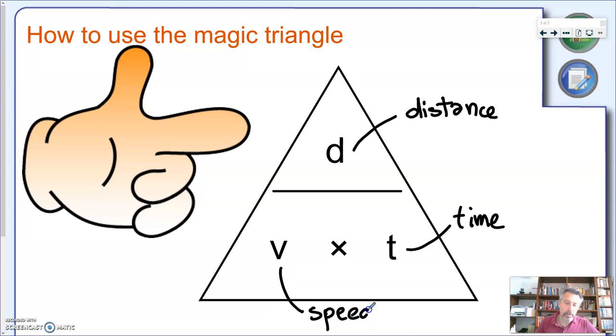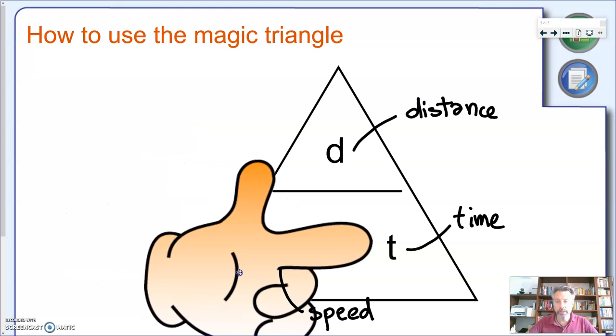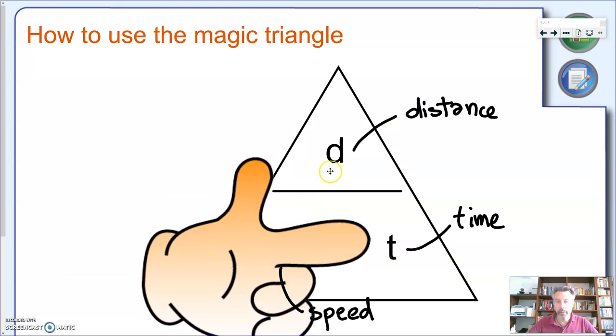Now, the magic triangle works by covering the quantity you want to find, and let's see how that works. So let's start with the first example, the formula we saw before. Let's imagine you want to find the speed. So I will take my hand here, this nice big friendly hand, and I will bring it to cover the quantity I want to find, which is speed. And let's see what we're left with. We are left with distance, and this line stands for the line of fraction, for the ratio, for division. So this means distance divided by time, which is exactly the formula we saw previously.